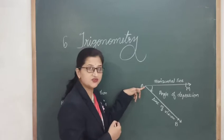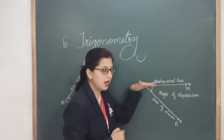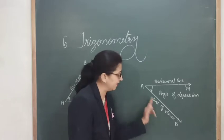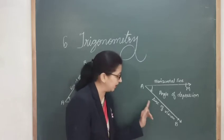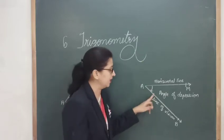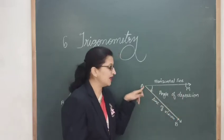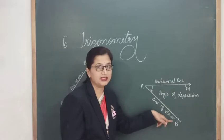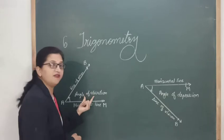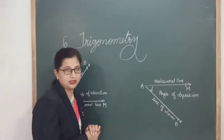In such a case, the straight line from the observer's eyes is the horizontal line. Since the person is looking at an object which is below, this ray AB is called the line of vision. The angle between the horizontal line and the line of vision is called the angle of depression — when the person is looking downward, there is an angle of depression.